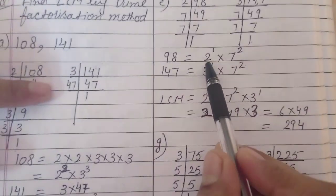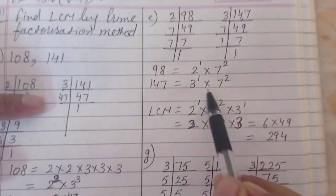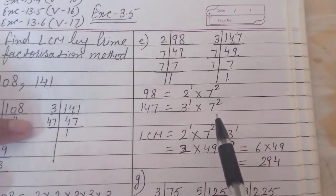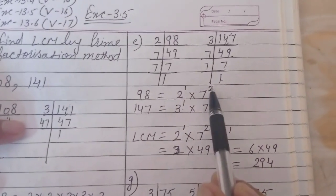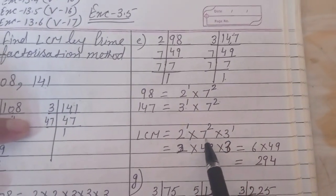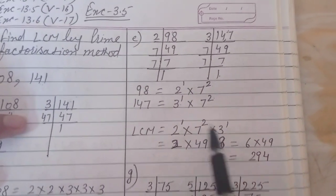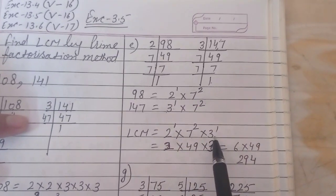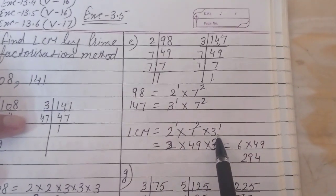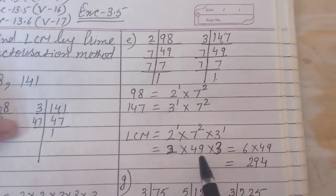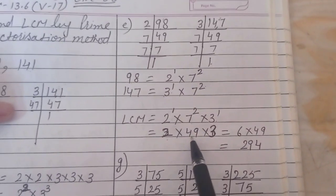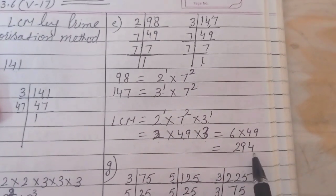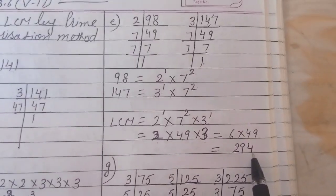Now LCM: 2 is here but not in 147, so we take it. 7 power 2 and 7 power 2 — powers are same, take the same. Into 3 power 1, here but not in 98, so we have to cover all numbers. 2 stays as is, 7 squared means 49, 3 power 1 means 3 only. Multiply — this will be the LCM.